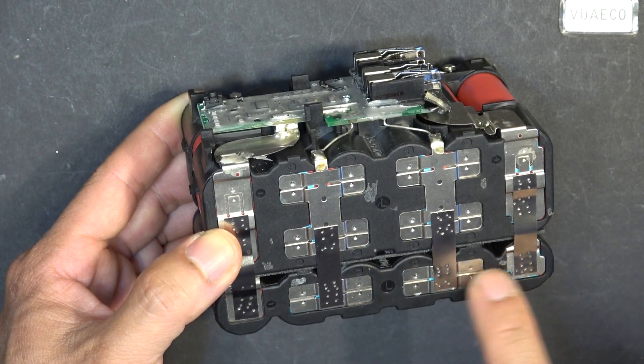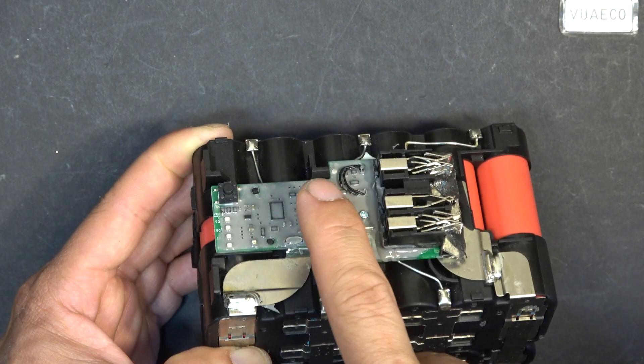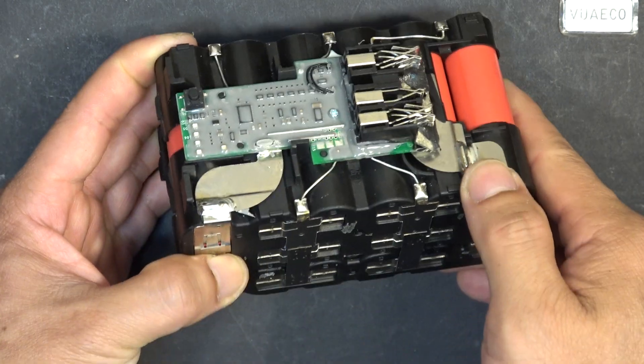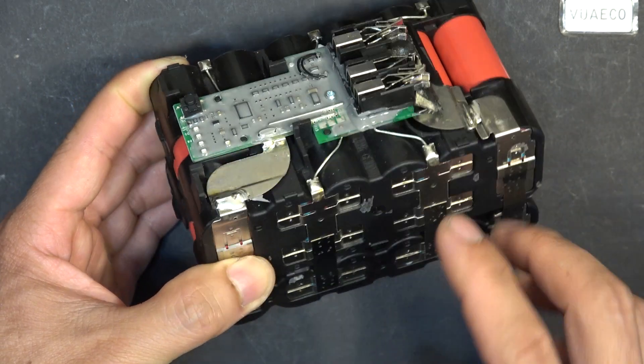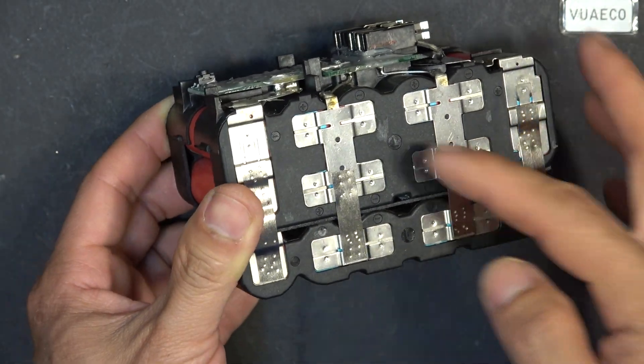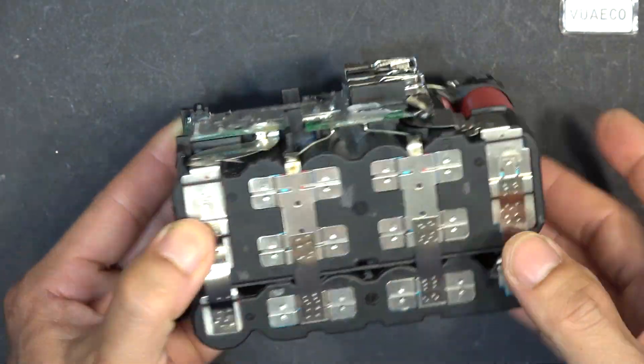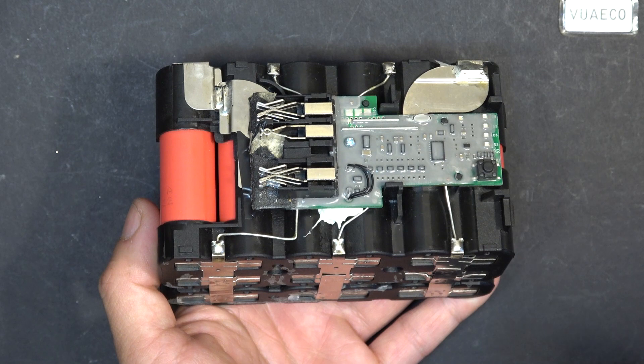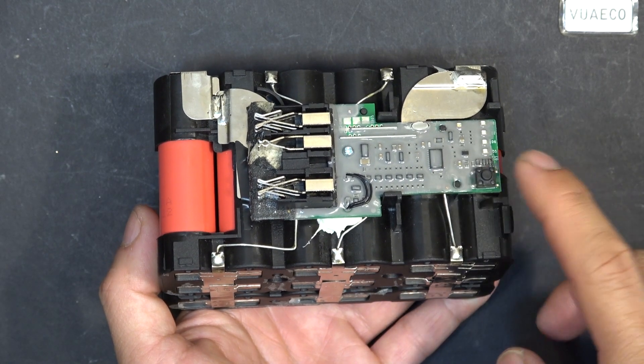So with this new battery pack on the bottom here, all the charging and balancing still based on this main board over here. Nothing has been changed because all of these are in parallel. And even this battery gauge here still works as normal.